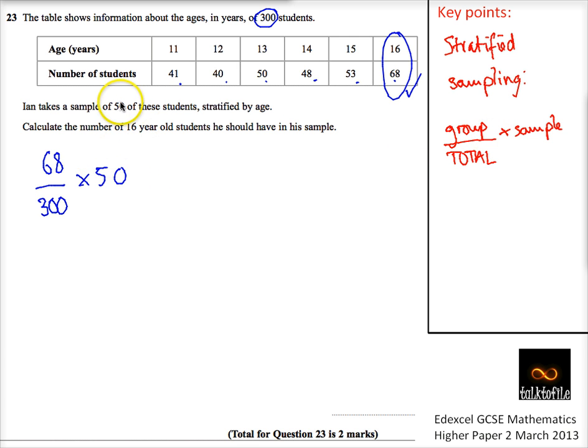The sample is 50, it says we want a sample of 50. We'll just do that on our calculator: 68 divided by 300 times 50 is 11.3 recurring.